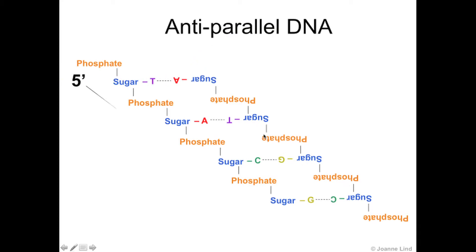So one strand is running 5' down to 3' where the base pairs are attached to a strand that is running in the opposite direction, starting at the bottom 5' and running up the 3' direction.